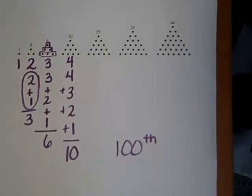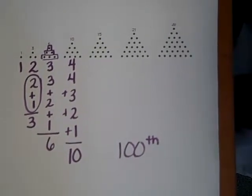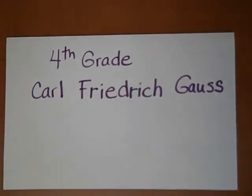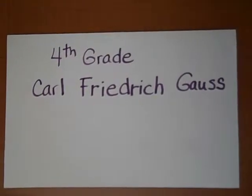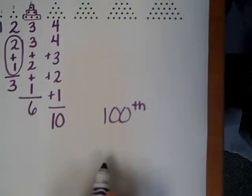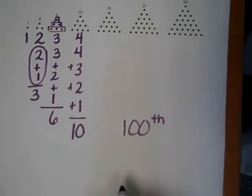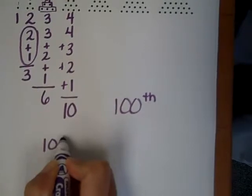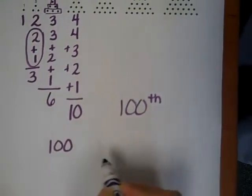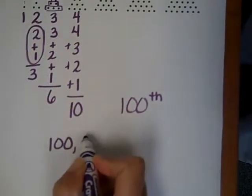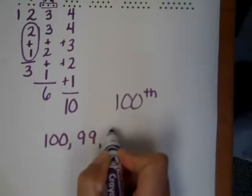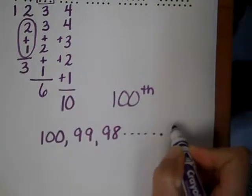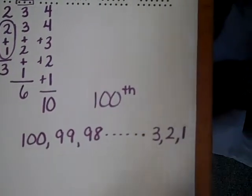So if we do that, actually there was a student in the fourth grade, his name was Carl Frederick Gauss and his teacher challenged him to write the sums of all the numbers from one to one hundred. And he was pretty ingenious because he said, well, if we have one hundred and then we have ninety-nine going down and then we have ninety-eight, eventually we'll get down to three and two and one.